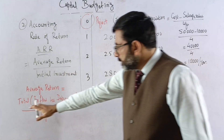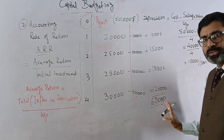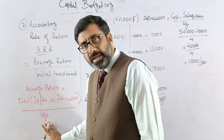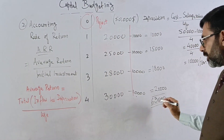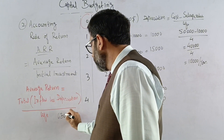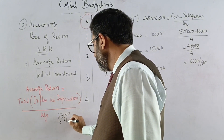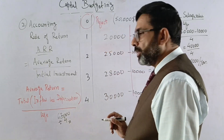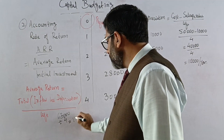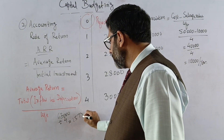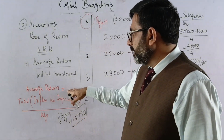The total of inflows less depreciation is 63,000. We then divide by the life of the asset, which is 4 years: 63,000 divided by 4 gives us an average return of 15,750.